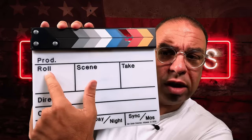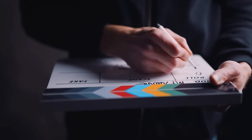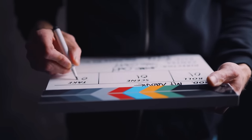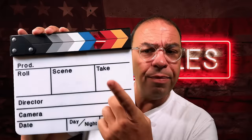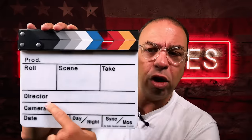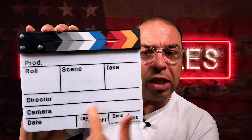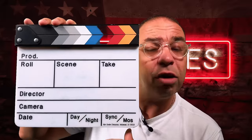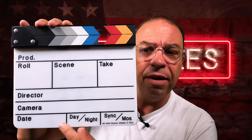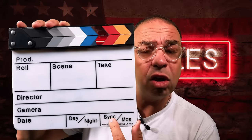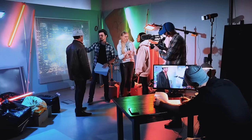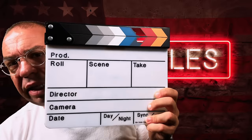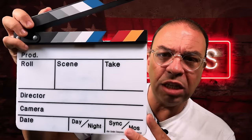On the slate you're going to see the production, the roll number — usually roll one, roll two, depending on what they are filming — and the scene number. You'll see scene one alpha, scene three Charlie, four Echo, whatever the case may be. And then what take are they doing — take one, take two. We've gone up to take 25 on this. You're going to see the director, the camera — which is the DP, the director of photography, the cinematographer — the date, day or night shot, and whether it's synced with audio or MOS. It's very important to know they're going to put this in front of the camera so they can mark it. Marking it means take one, scene one, whatever the case may be.